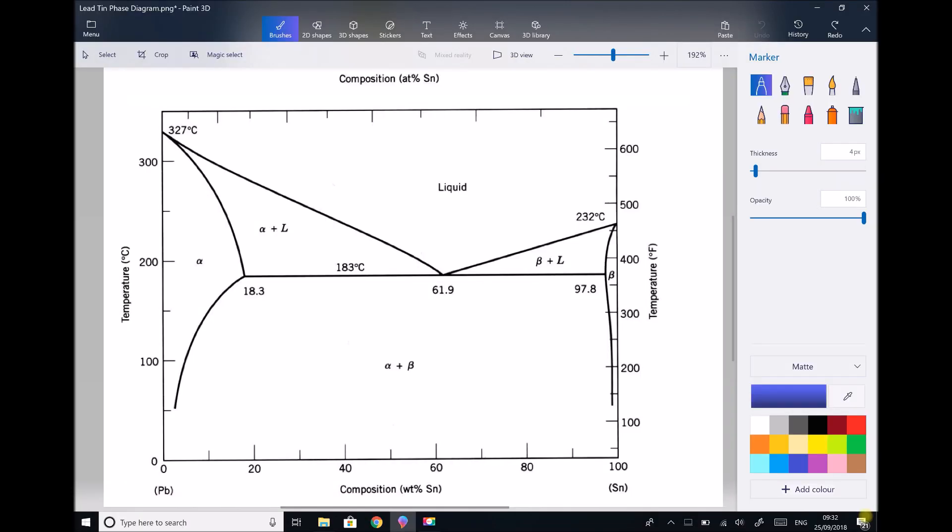In this video tutorial we're going to begin looking at something called a phase diagram. Phase diagrams explain how alloys change from solid to liquid at different compositions. Just before we start I'll explain the diagram so that you know what you're looking at here.